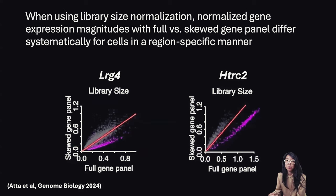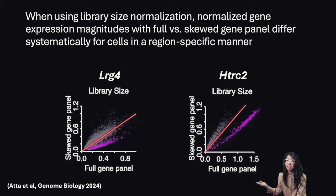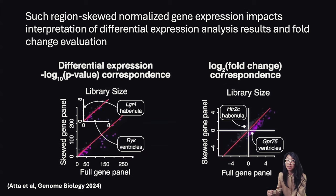Notably, when using gene-count-based normalizations including library-size normalization, the normalized gene expression magnitudes with the full versus the skewed gene panels differ systematically for cells in a region-specific manner, as you would expect. Consider these two genes as examples — each point here is a cell. The x-axis is the library-size normalized gene expression magnitude with the full gene panel, and the y-axis is the library-size normalized gene expression magnitude with the ventricle-skewed gene panel, with cells within the ventricles shown in purple. You can appreciate how the expression magnitude of these genes, depending on whether you use the full or the skewed gene panel, differs particularly in a region-specific manner. Such region-skewed normalized gene expression magnitudes then impact the interpretation of downstream differential expression and gene fold change evaluations.